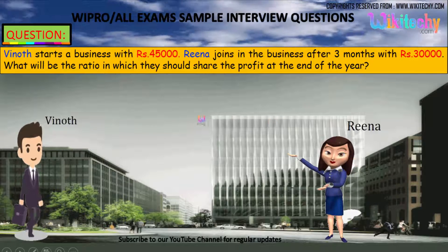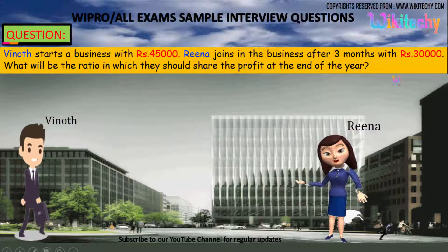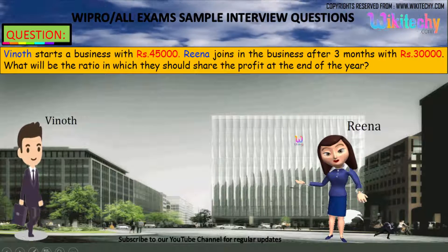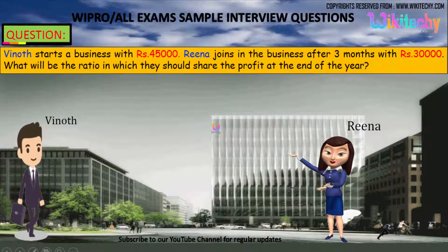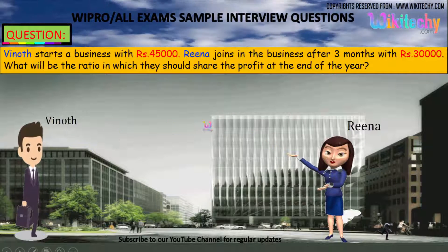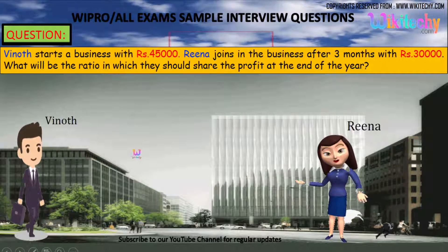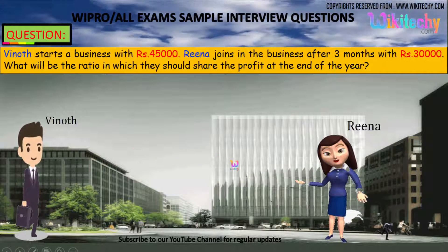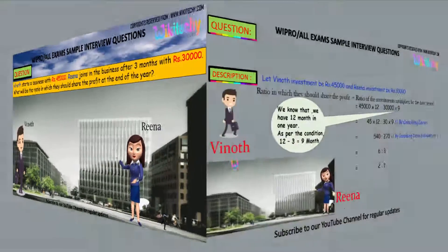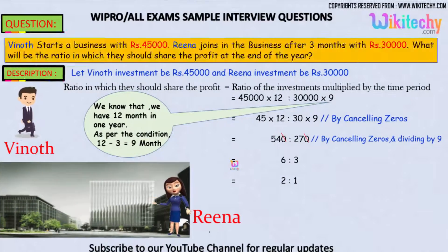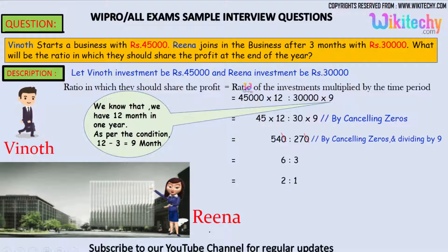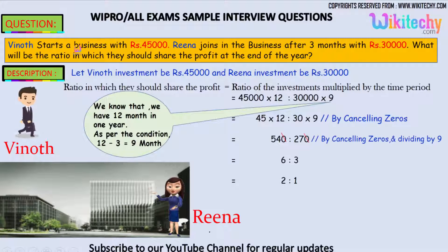Rena joins the business after three months with rupees 30,000. What will be the ratio in which they should share the profit at the end of the year? The ratio in which profit is shared is the ratio of investment multiplied by the time period.